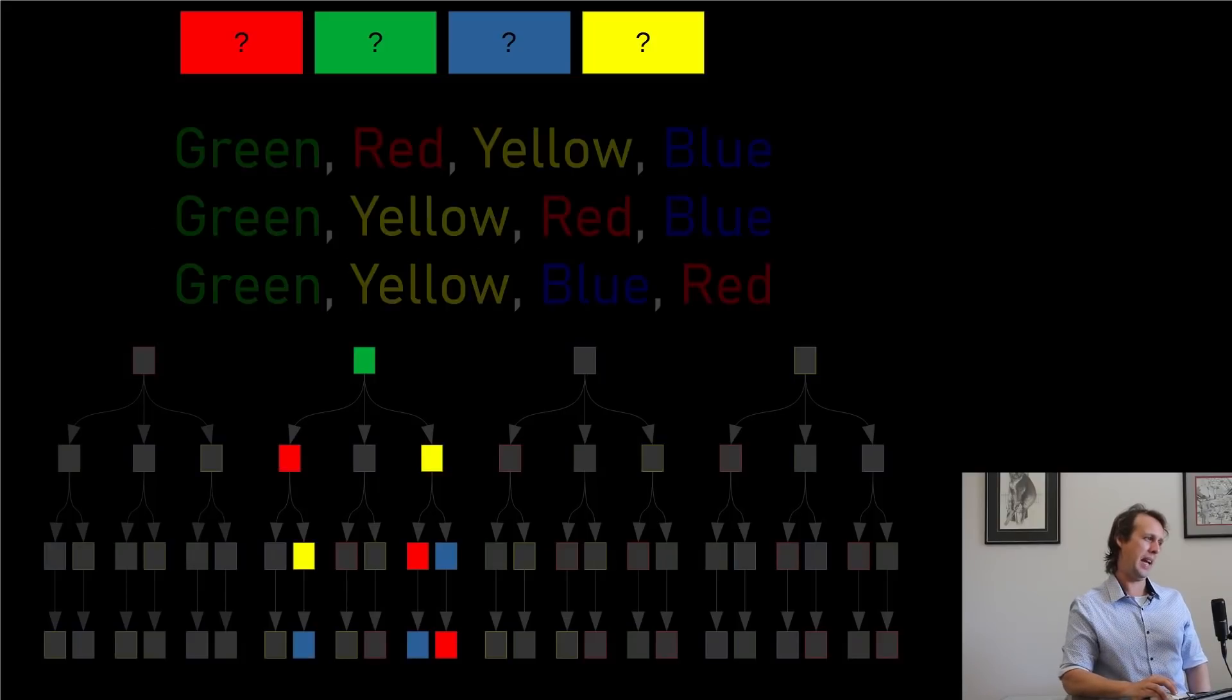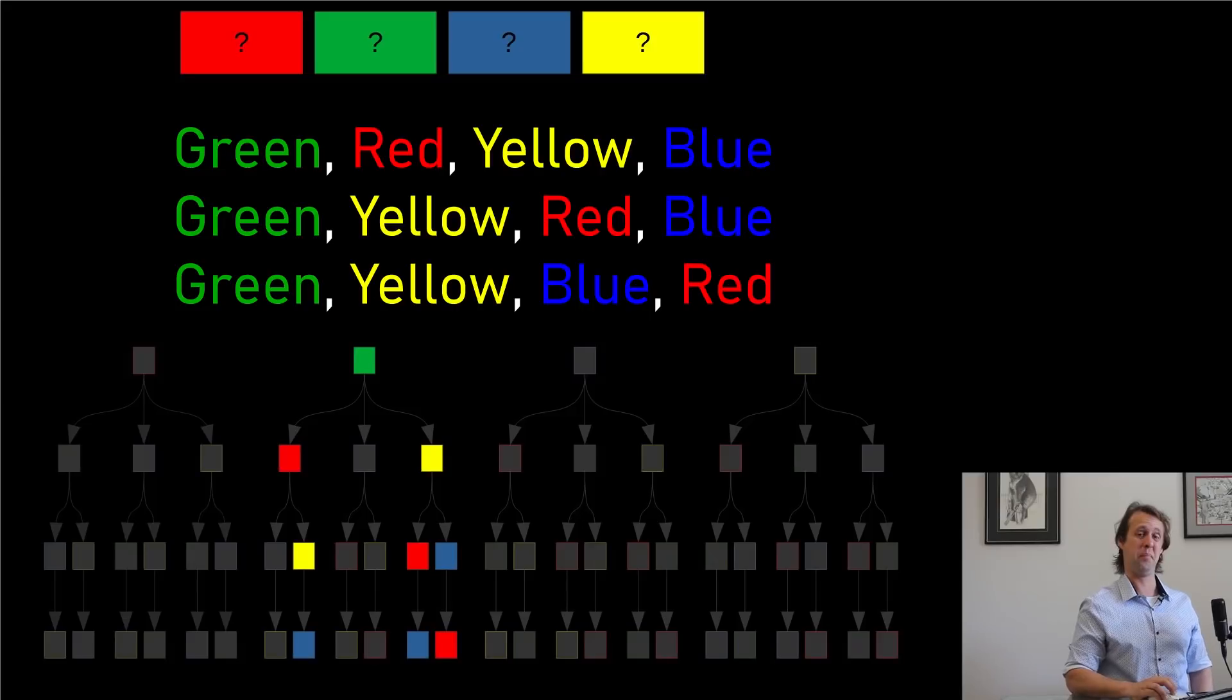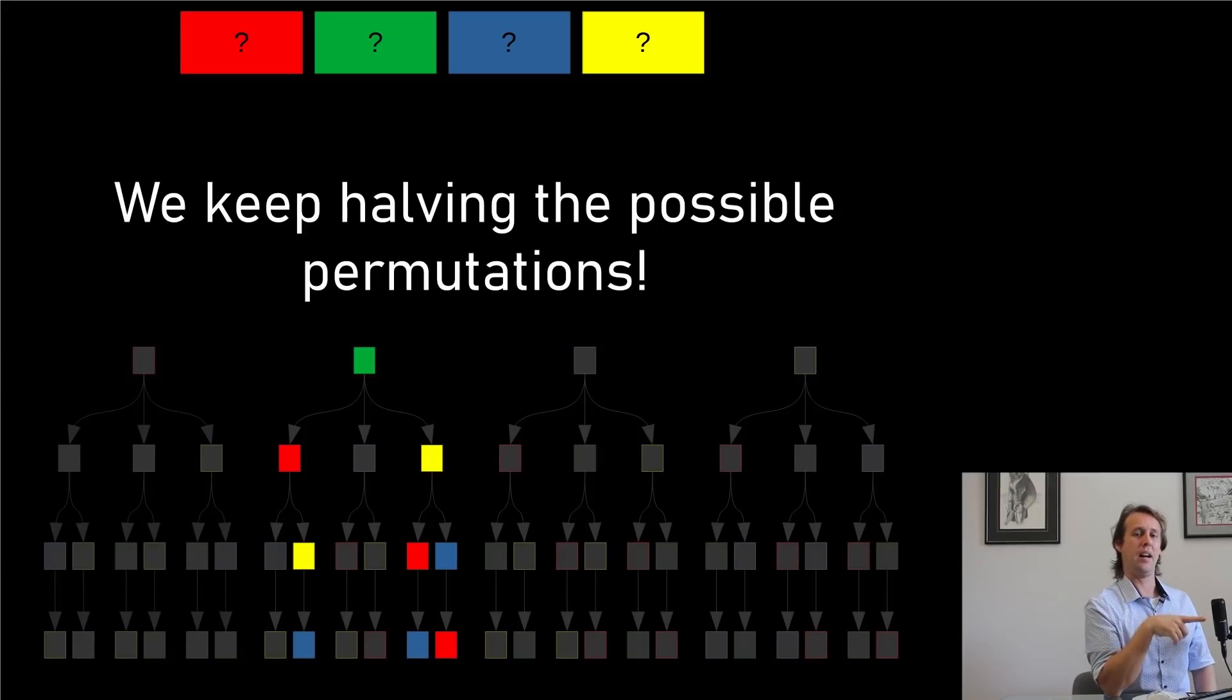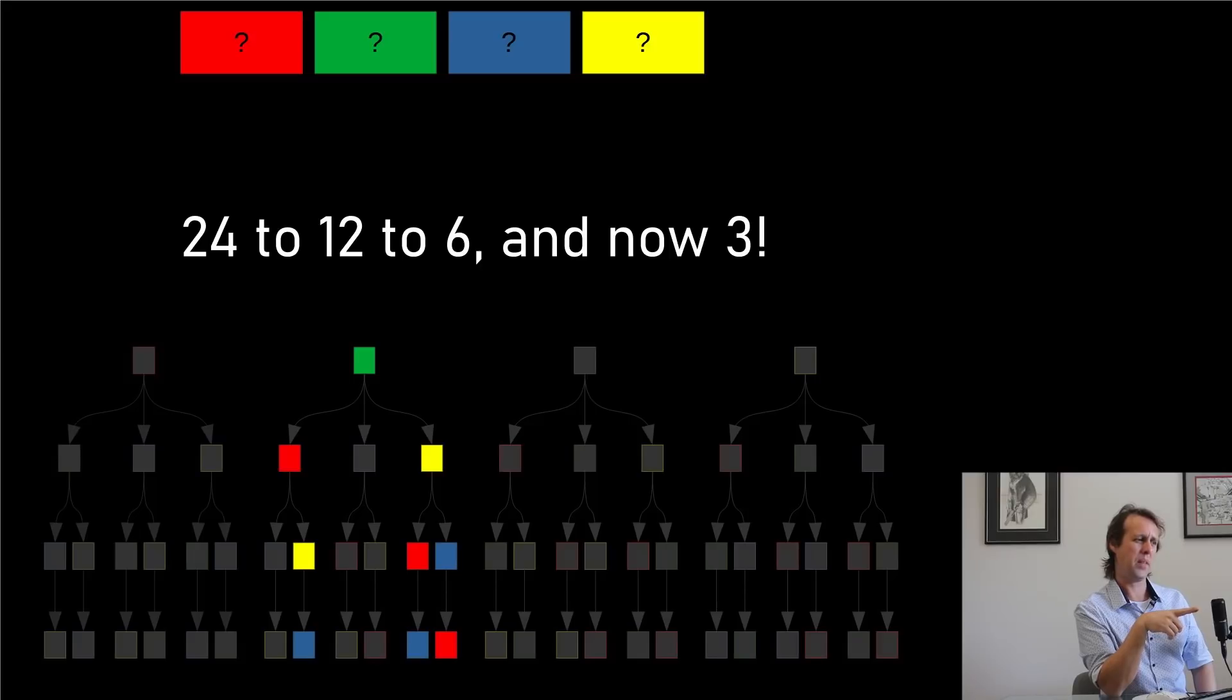And we know that the sorted permutation is one of these three remaining paths. So it either goes green, then red, then yellow, then blue. Or it could go green, then yellow, then red, then blue. Or the other option is green, then yellow, then blue, then red. So also notice that once again, we've halved the number of remaining permutations. We keep halving the number of permutations that we've got to check every time we ask these questions. We started with 24. Then we asked the question and reduced that to 12 possible paths that we've got to check. Then we reduced it to six possible paths. And now we've just got three left.